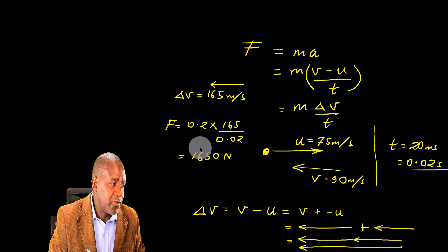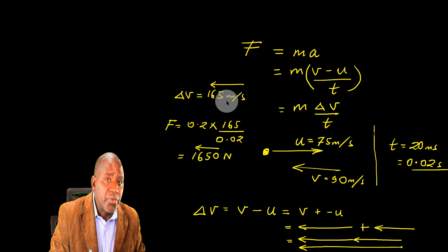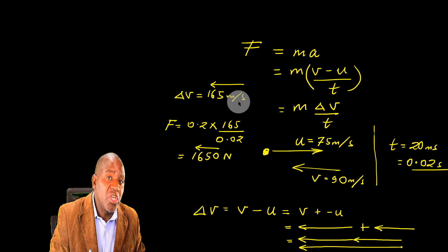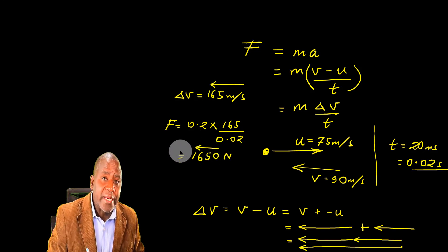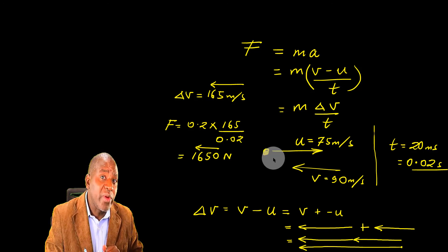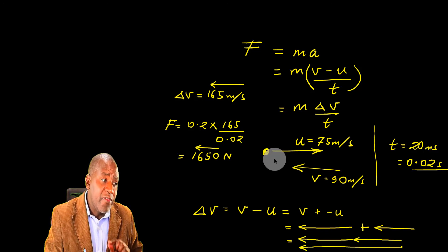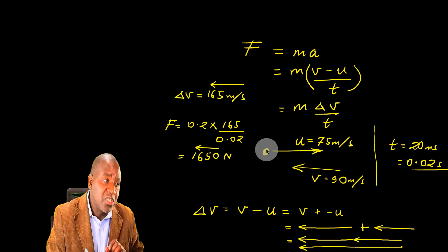This resultant force must be in the direction of the acceleration and the acceleration must be in the direction of the change in velocity which is to the left. So this force is to the left. And indeed, it makes sense because when this tennis ball is struck with the racket the force on it must be towards the left and that is where it changes direction.